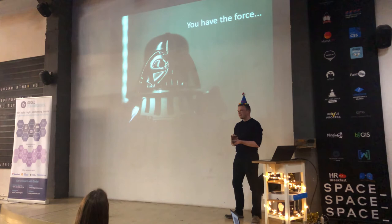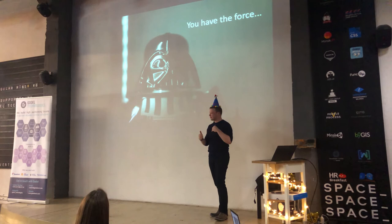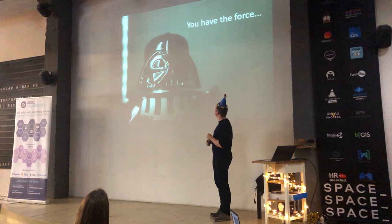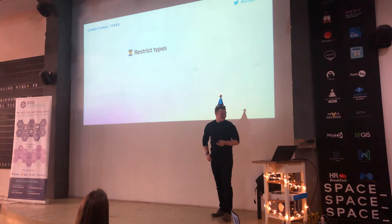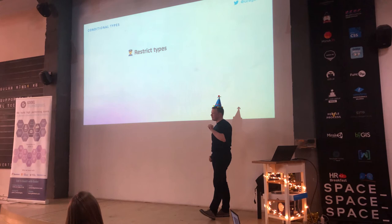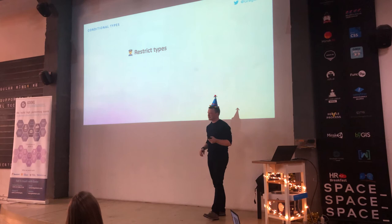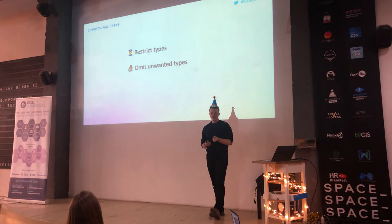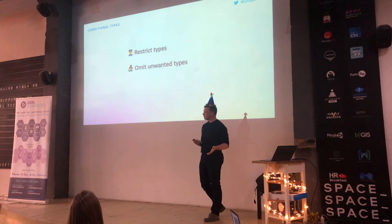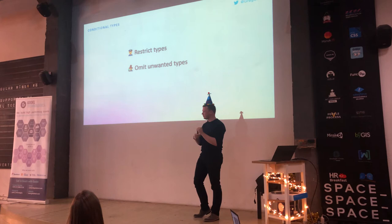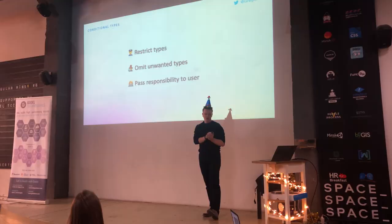Conditional types give you full power over what to do with your parameters and results. You have three ways of working with conditional types. First, you can restrict types — by adding type constraints you allow only a certain set of types. Second, you can omit unwanted types — completely delete them if those types are somehow converted into valid types. Third, you can pass responsibility to the user, meaning you acknowledge you don't know how to handle a certain type.